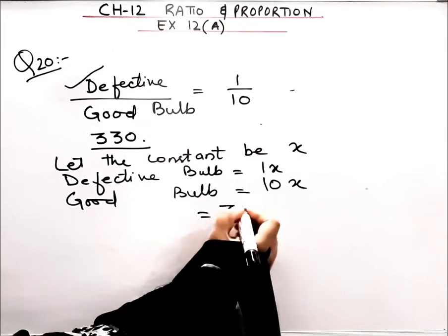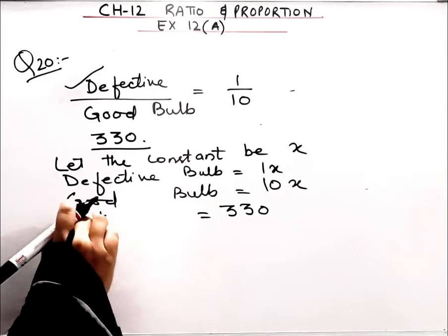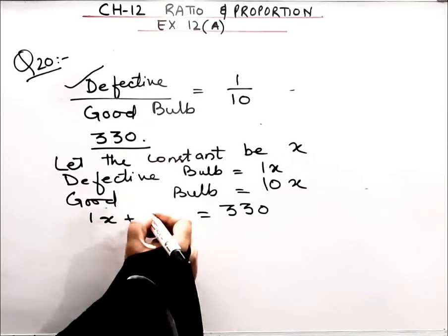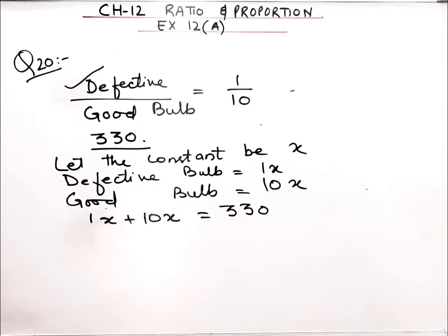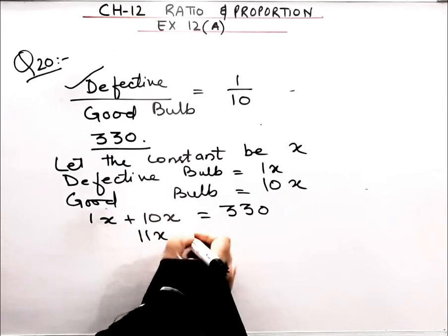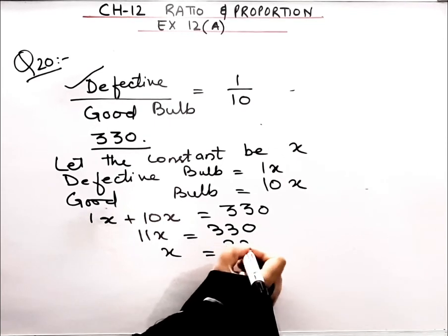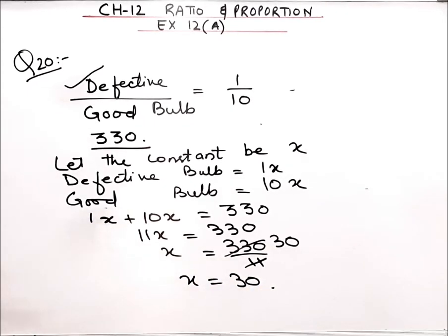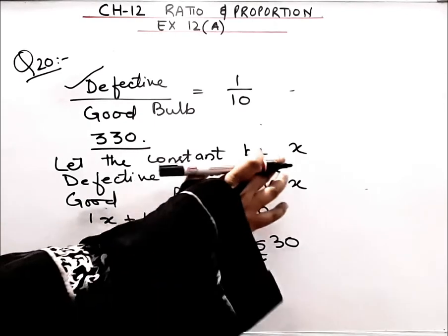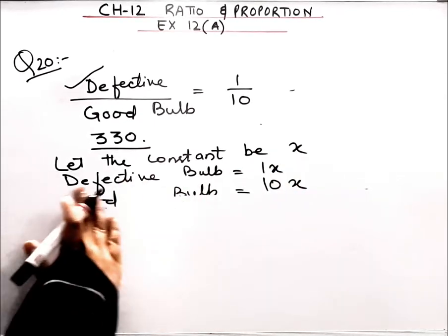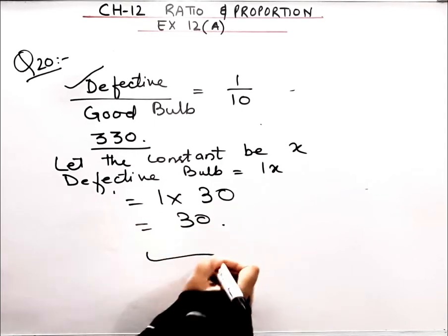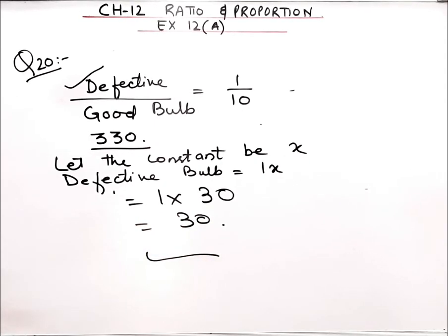We know the total bulbs is 330. So adding defective and good: 1x + 10x = 11x = 330. Therefore x = 330/11 = 30. Now, the number of defective bulbs = 1 into x = 1 × 30 = 30. That means in one hour, that factory produces 30 defective bulbs.